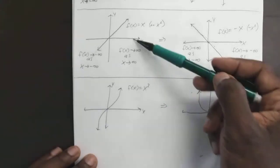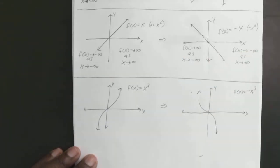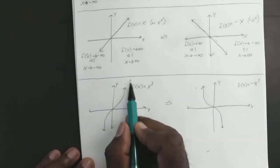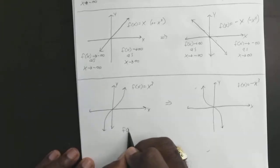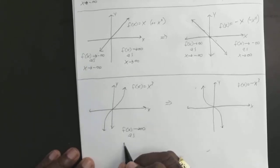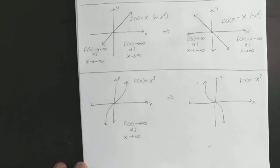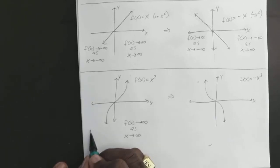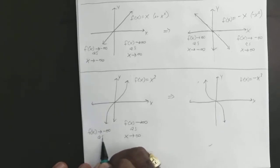You can do the same thing here, and you're going to notice a pattern for these two. As X gets bigger, Y gets bigger, so f(x) goes in the positive infinity direction as X gets bigger. And as X is getting smaller and smaller, Y is getting smaller and smaller, so f(x) approaches negative infinity as X gets smaller and smaller.